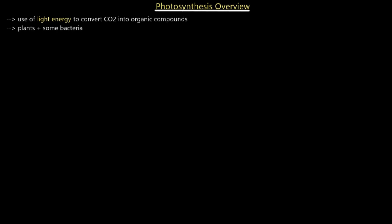First, let's get a definition: photosynthesis is the use of light energy to convert carbon dioxide into organic compounds such as carbohydrates. Organic compounds simply means carbon bonded to hydrogen — any compound containing this sort of bond is considered an organic compound. Photosynthesis produces these organic compounds because they are then used in cellular respiration.